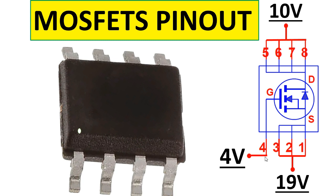For every MOSFET, the gate receives the control signal. Every MOSFET contains inside it a diode — as you can see, the diode is between the drain and the source. The type of this MOSFET is NPN.